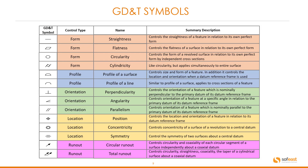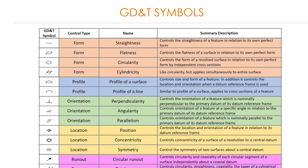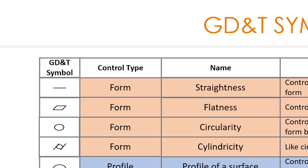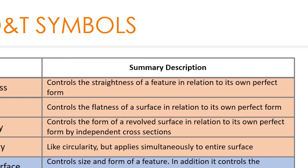Here's a table of the GD&T symbols — you can pause this and study it at your own leisure. On the left-hand side we have the symbol, then the control type itself, the name of the symbol, and a summary description. Looking at the top one: the symbol is a straight line, the control type is form, and the form name is straightness. The summary description on this controls the straightness of a feature in relation to its own perfect form.